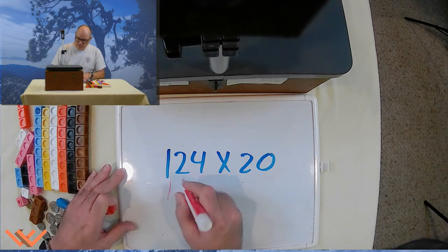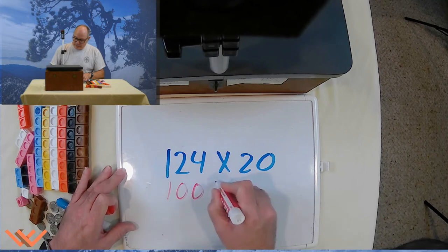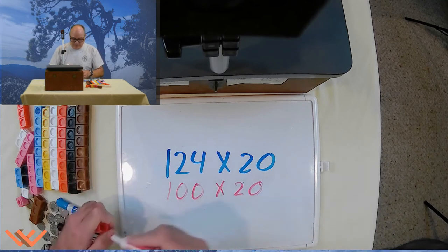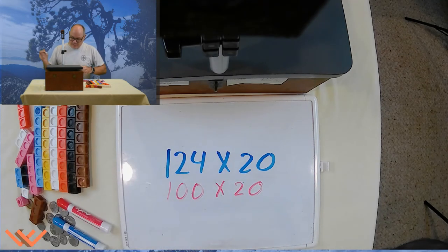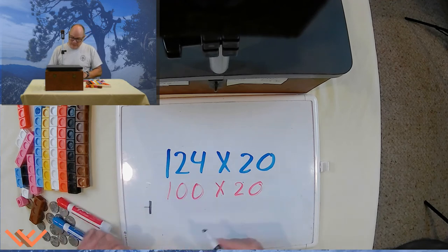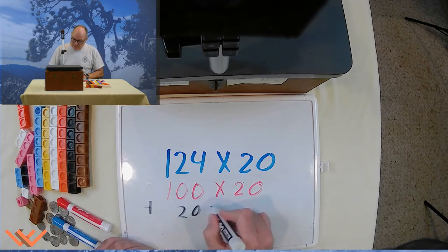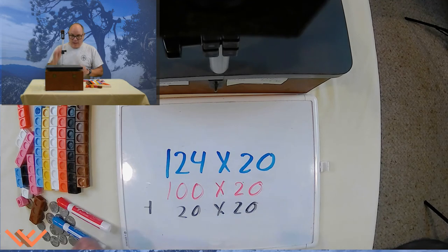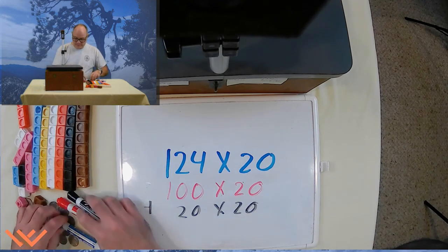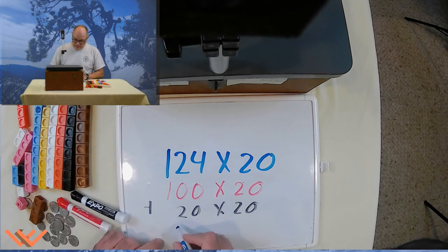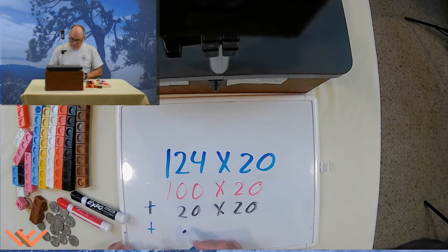So, let's see here. So that could be 100 times 20, plus 20 times 20, plus I want to say plus here again, so plus 4 times 20.